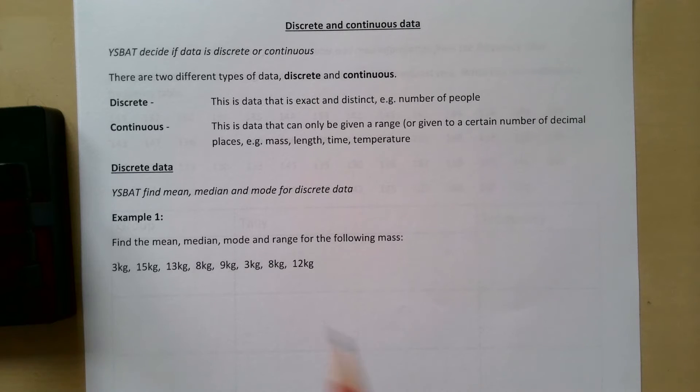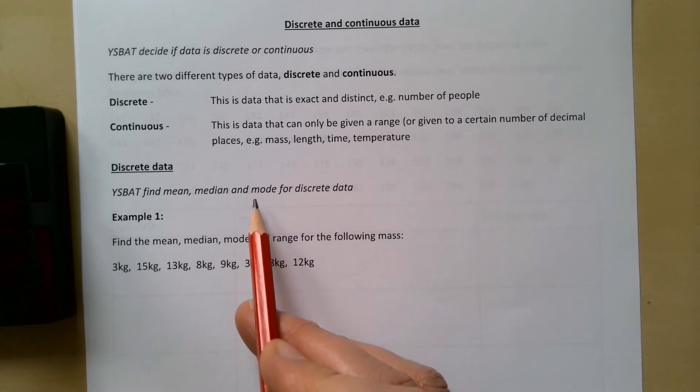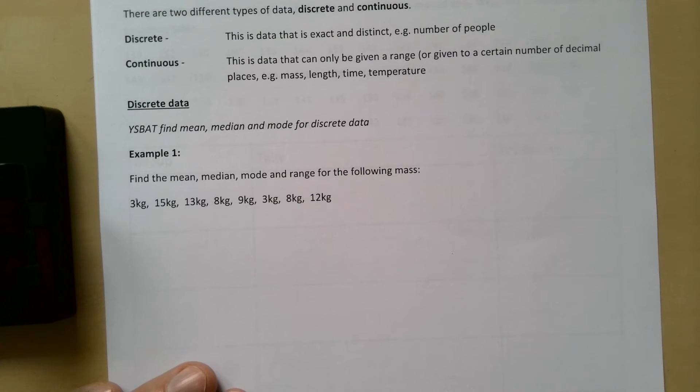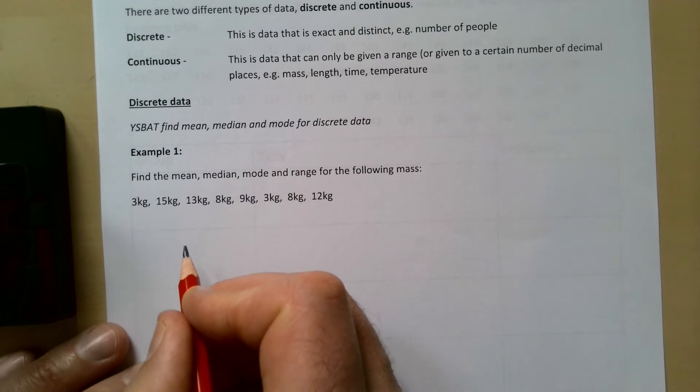So for discrete data, you should be able to find the mean, median, and mode. Find the mean, median, mode, and range for the following masses.